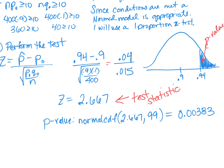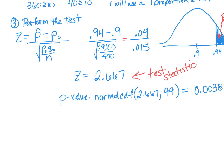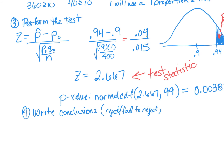My p-value is 0.00383. Is that small enough to reject? Yes — it's less than 1%. Step four is the conclusion. We're going to reject or fail to reject and interpret our p-value in context. The AP exam may ask you to interpret a p-value as an entire free response question, so we practice this over and over.